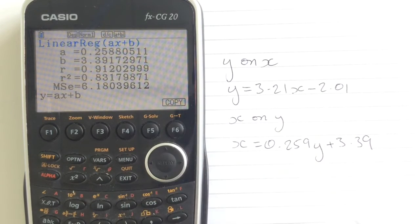But these are the correct values for the x on y regression line. It's not perfect, but it does work.